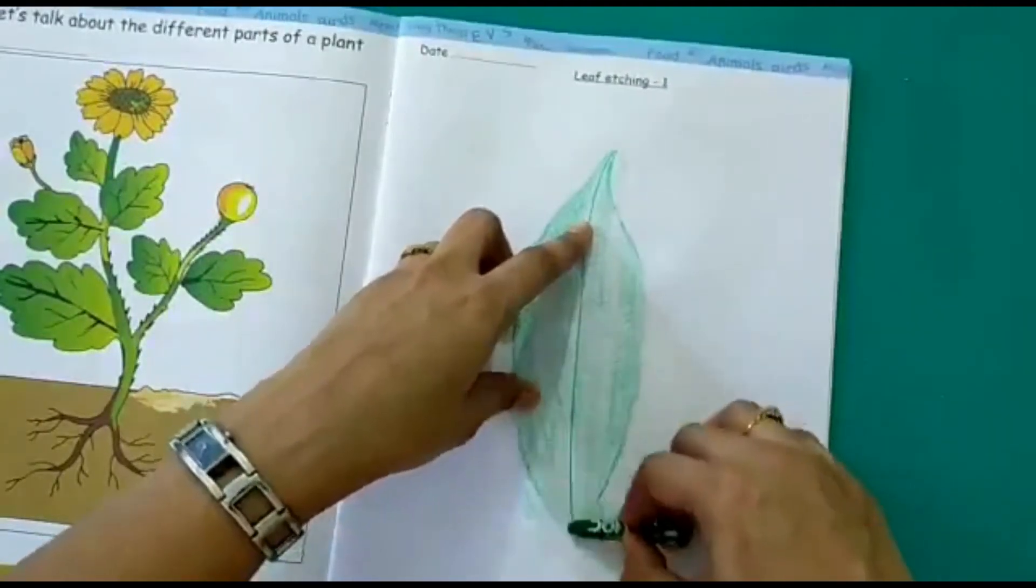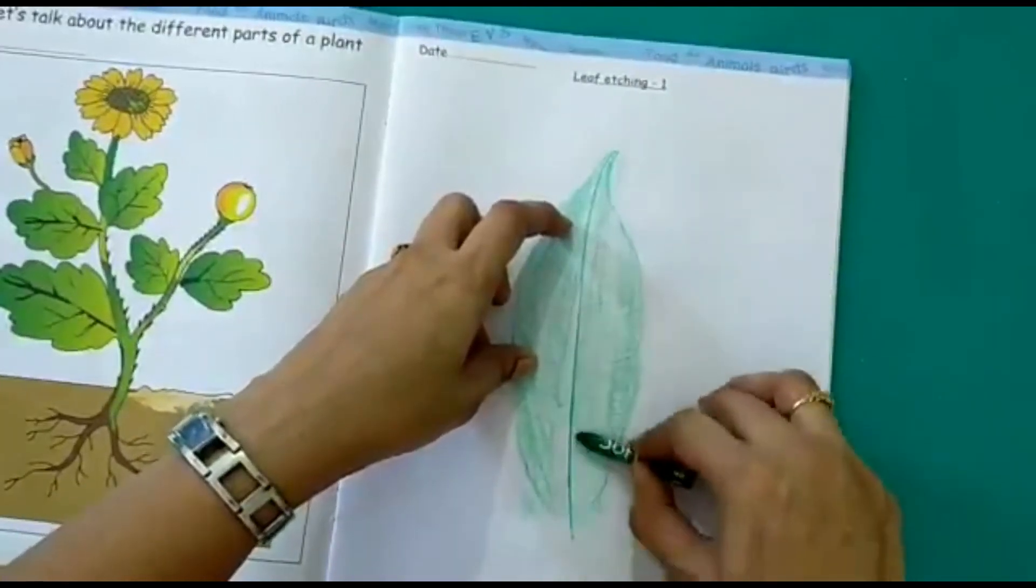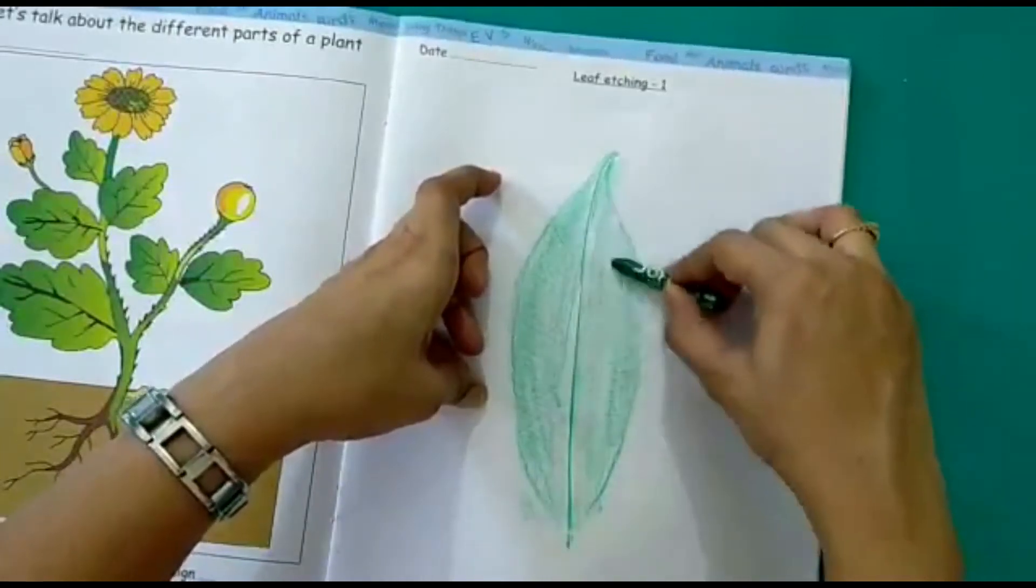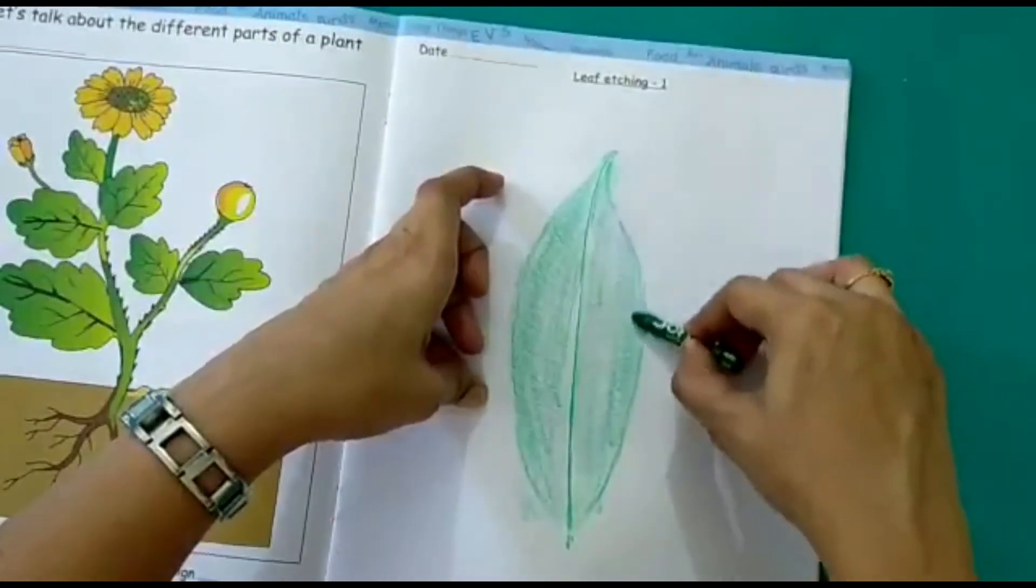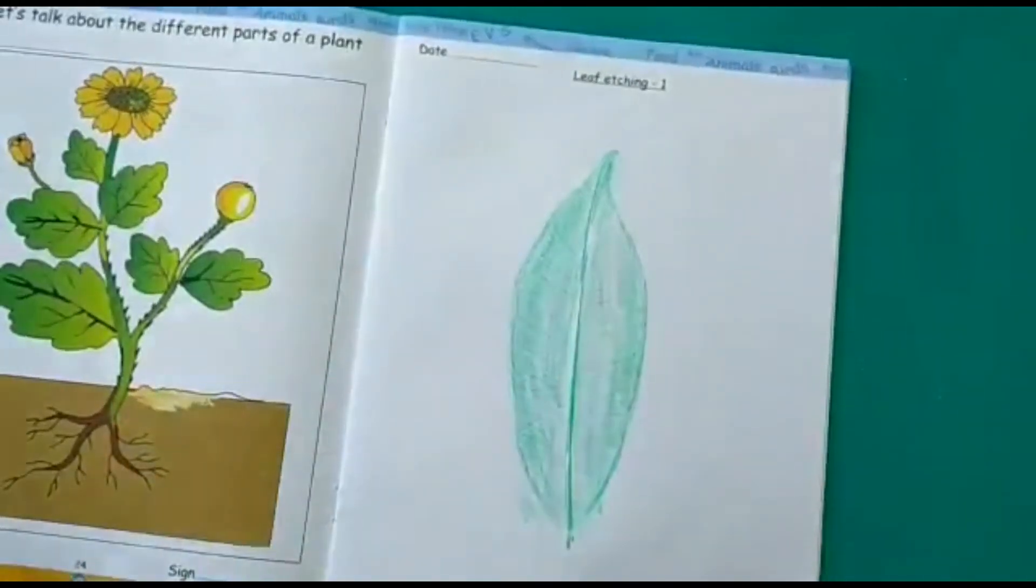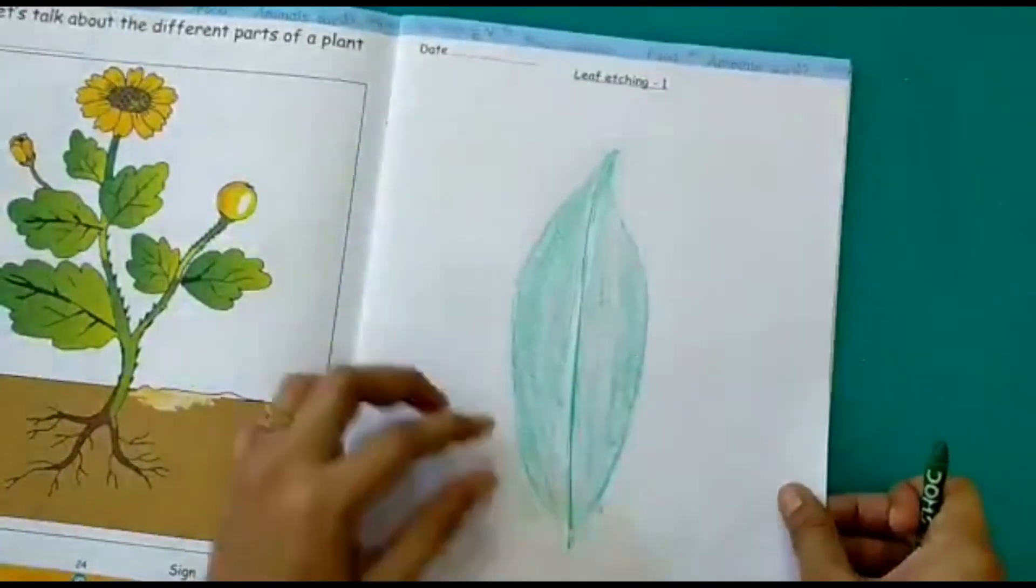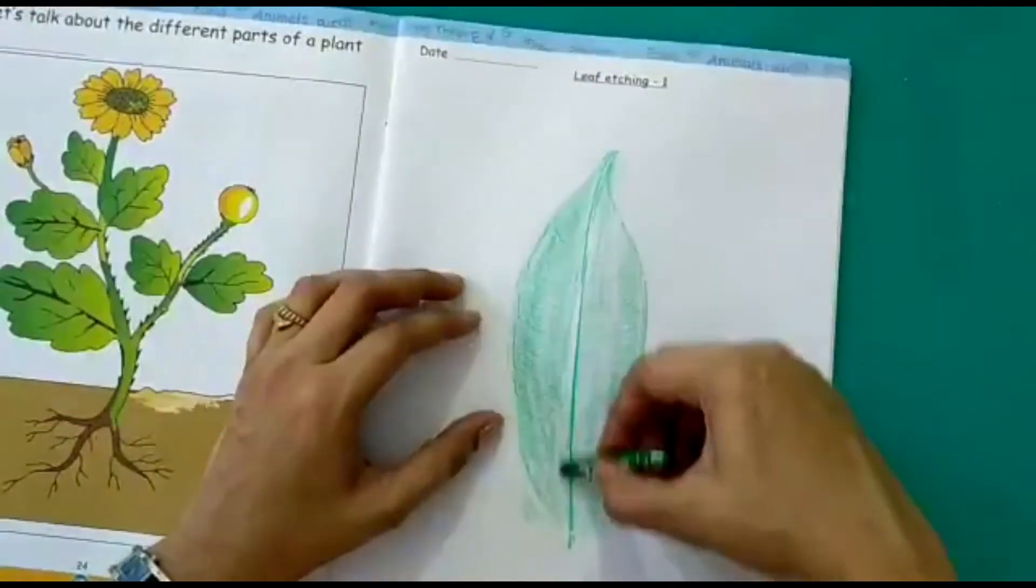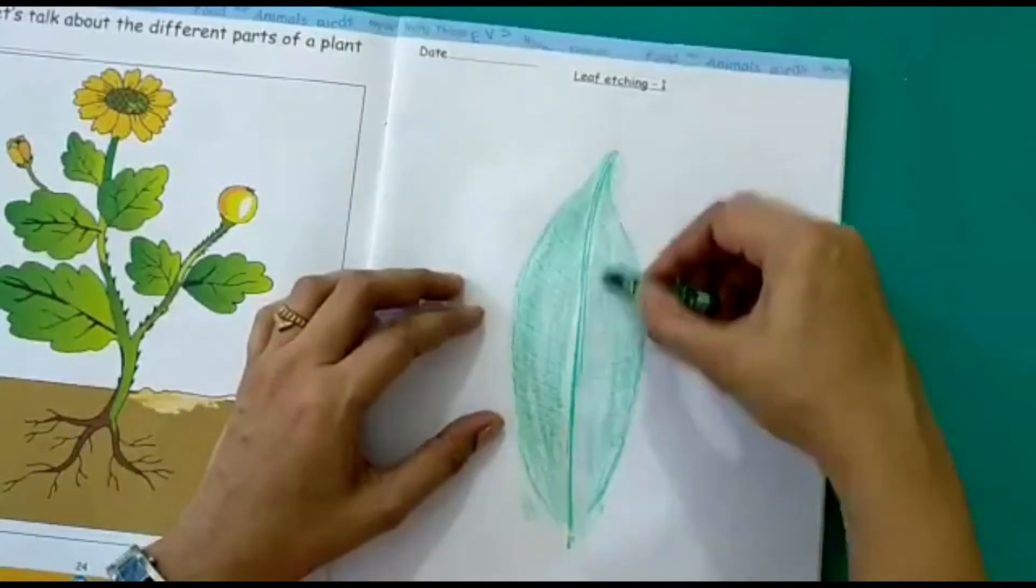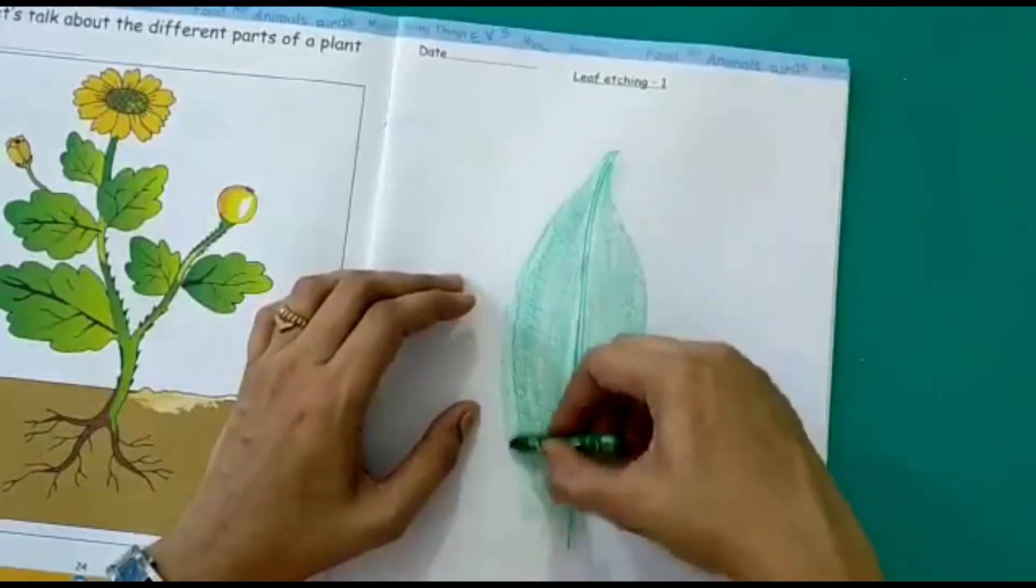This is how you have to do your activity of leaf etching. This is like magic, right? See? Where is the leaf? The leaf is on the other side of the page. And when we pass the crayon over the leaf you get the figure or the impression of the leaf on this side of our page.